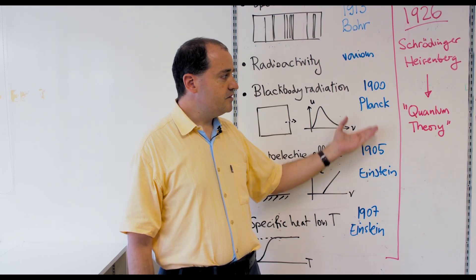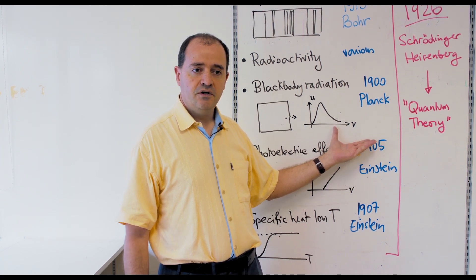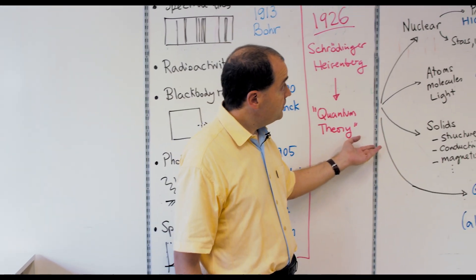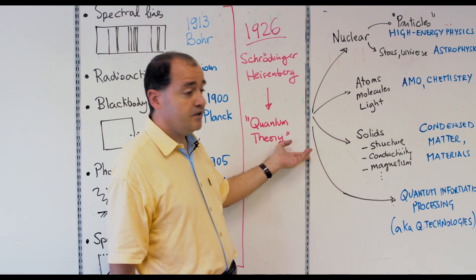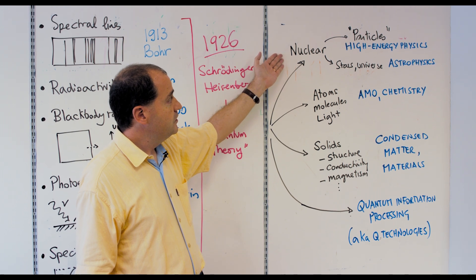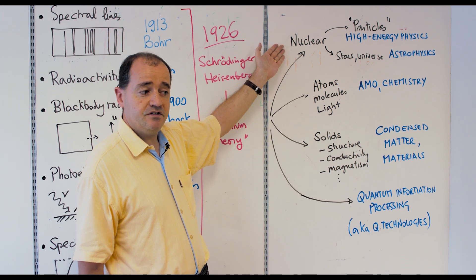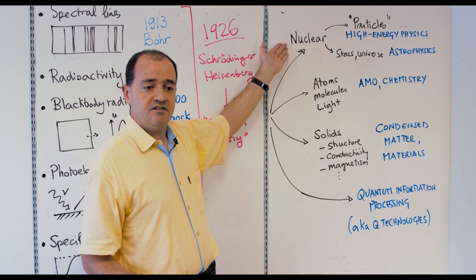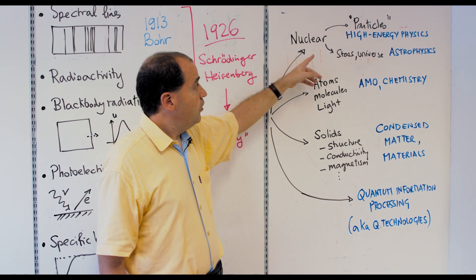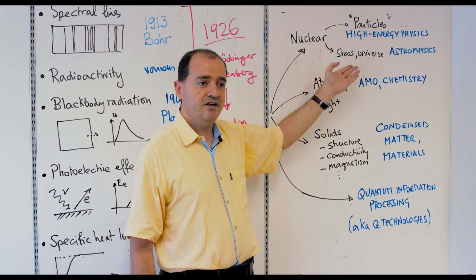Quantum theory was applied to a huge variety of phenomena, to the point that essentially all of modern physics relies on it. It explained the behavior of the nucleus, which led later to what is called particle physics or high energy physics, where sub-nuclear particles have been discovered — the physics done at CERN, for instance. Nuclear physics is also the basis of the energy of the stars, so quantum theory is very important in astrophysics.